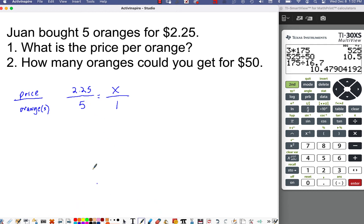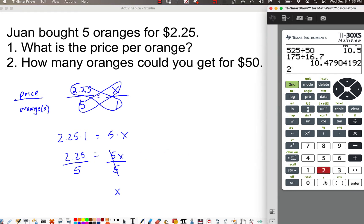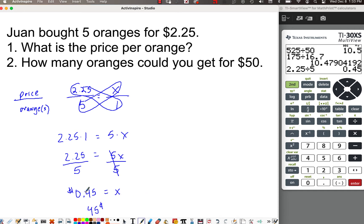But again, I always like to teach the cross multiplication. So you could just take 2.25 divided by five, but let me show you that if you do it this way, it's the same thing. So if we do 2.25 times one, we're going to get 2.25. And then we take 5x equals five times x, that equals 5x. So then we divide each side by five, cross multiply then divide. So we're looking at $0.45 per orange. Let me write that two different ways, $0.45 or 45 cents if it's in dollars.